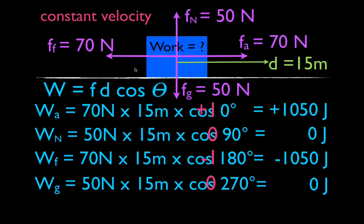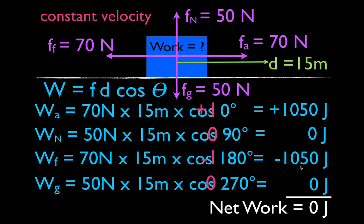The net force on the object is zero and the object moves at constant velocity, so the net work is also zero — the object is not speeding up or slowing down. That's the difference between positive and negative work. If you click the link, there's a video on the difference between negative and positive work for vertical motion. Keep your cosines and your angles straight, and it's not that complicated. Leave a comment or a thumbs up if you found it helpful, and we'll see you in the next video.